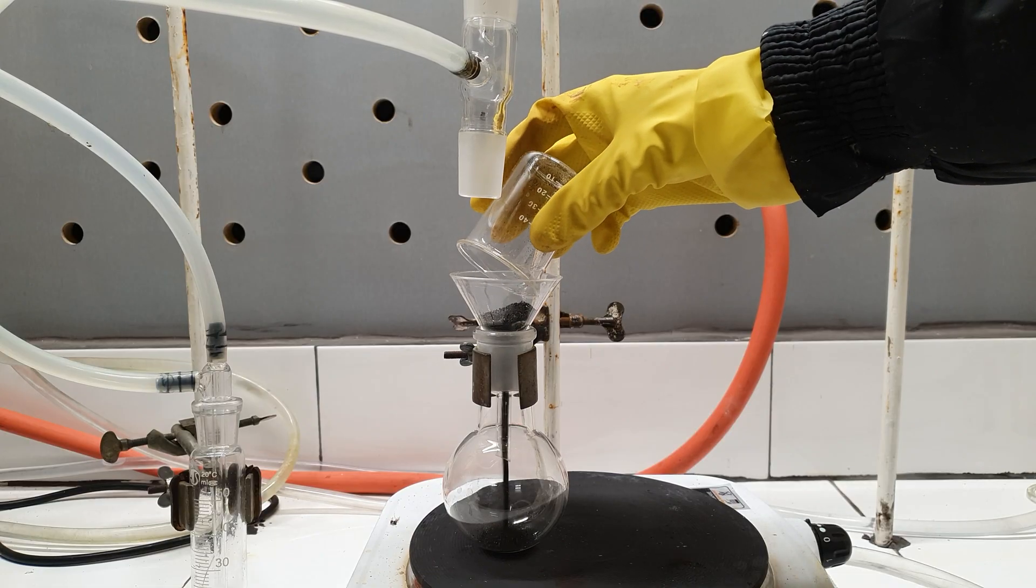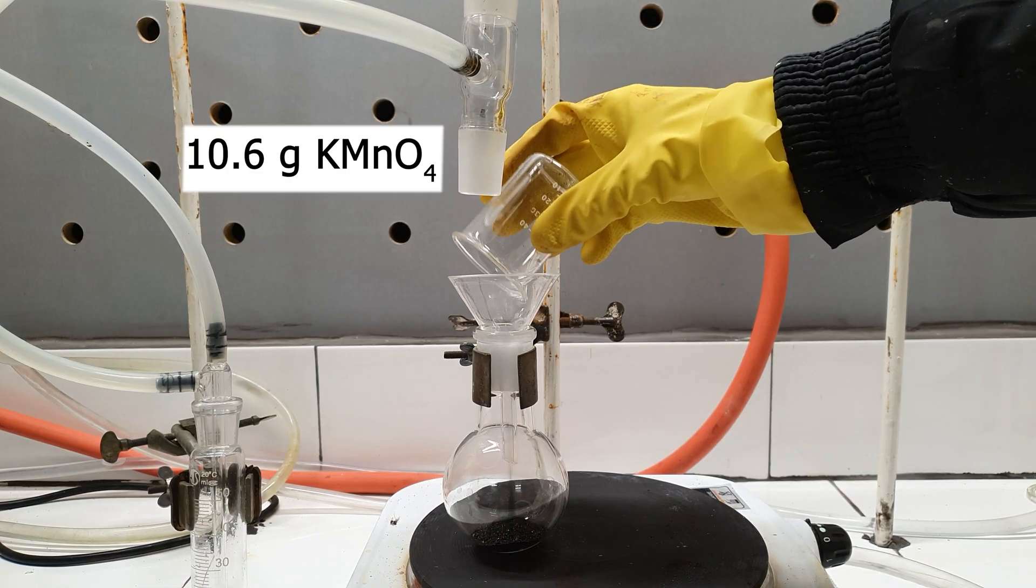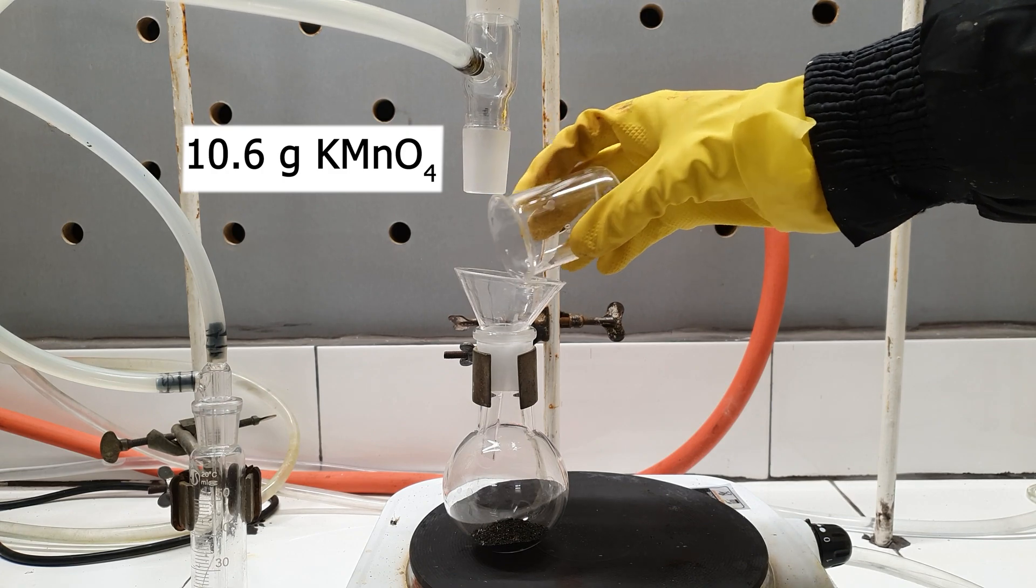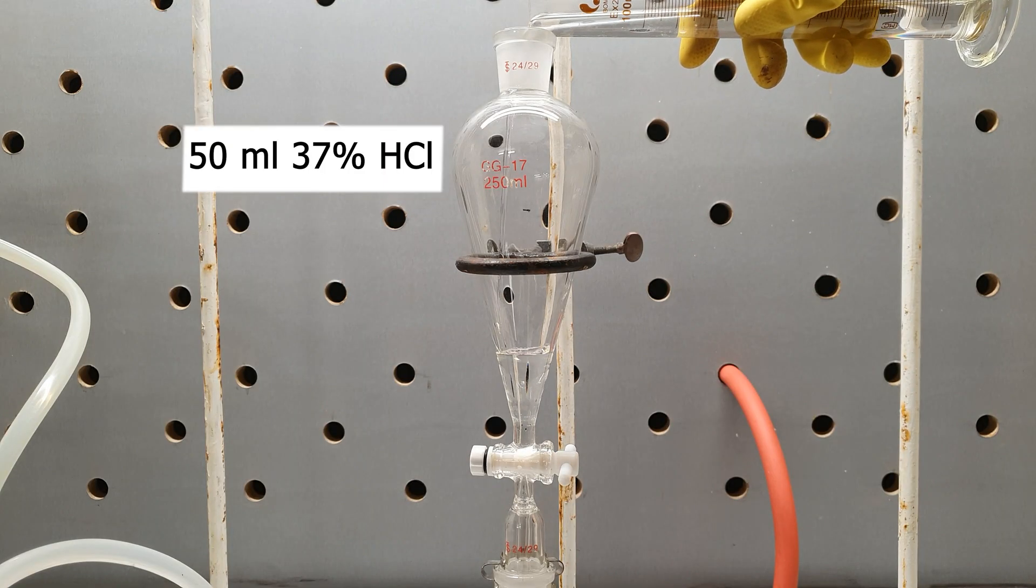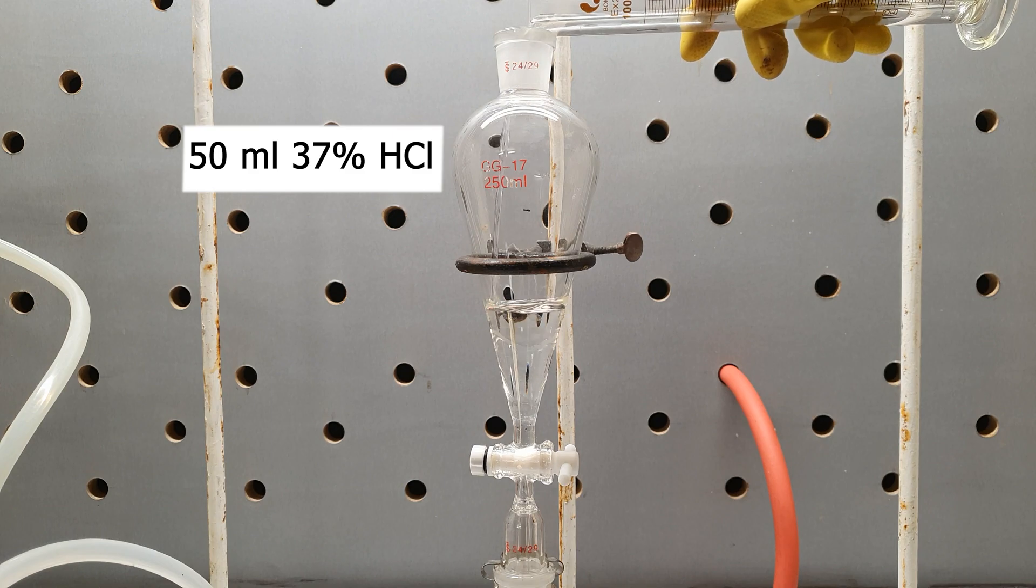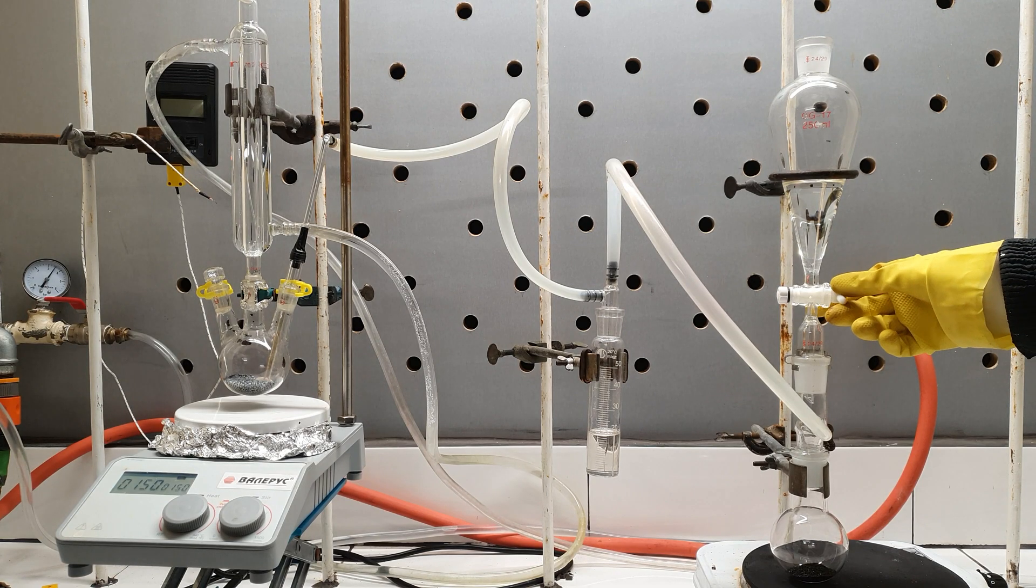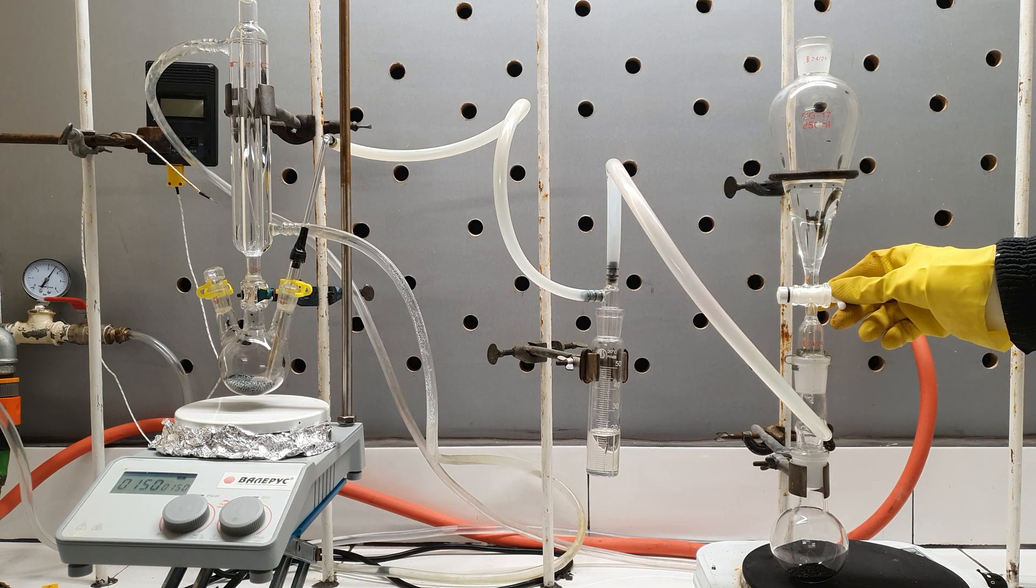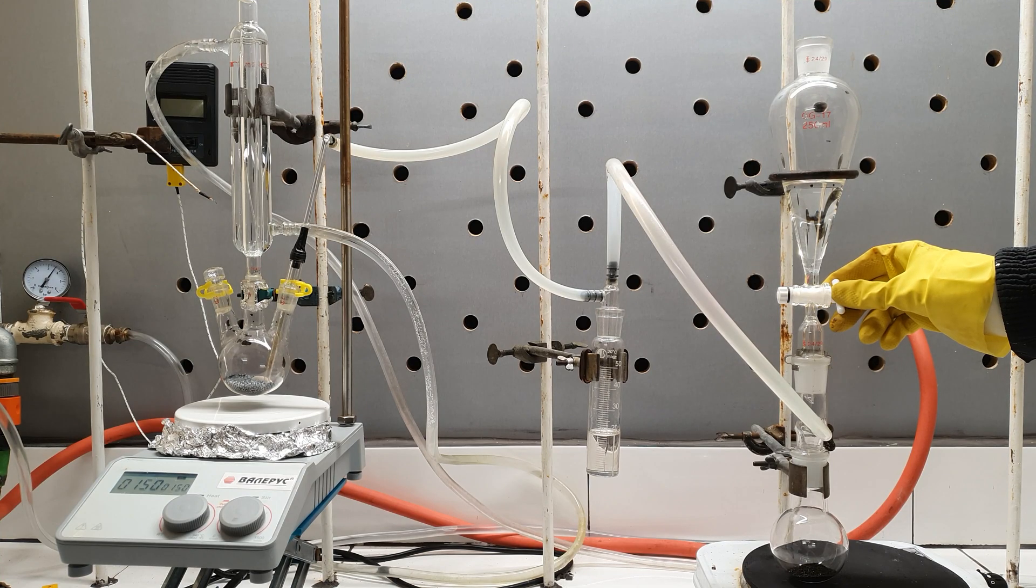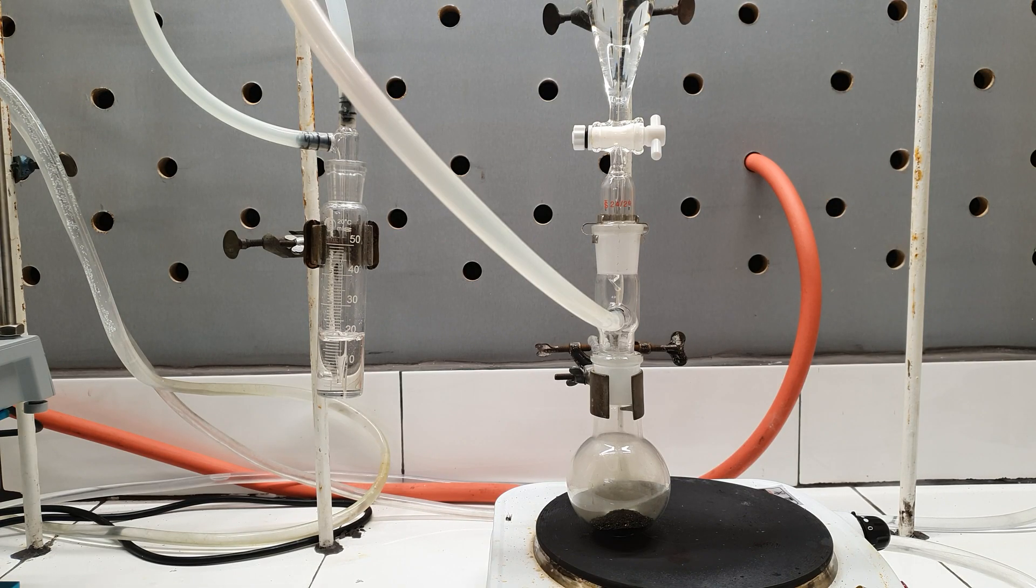The chlorine generator flask is charged with 10.6 grams of potassium permanganate. The funnel on the top was filled with 50ml of concentrated hydrochloric acid. When everything was ready, I slowly rotated the stopcock, allowing some of the acid to drip in the permanganate. Immediately, a vigorous reaction followed, which you can tell by the rapid bubbling in the drying flask.